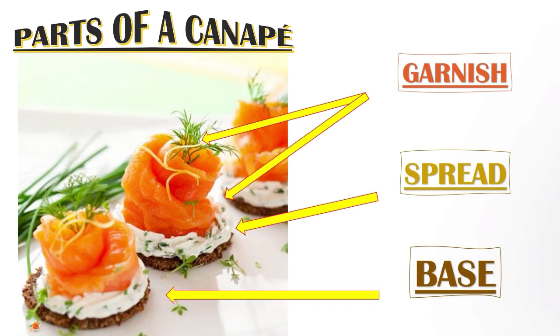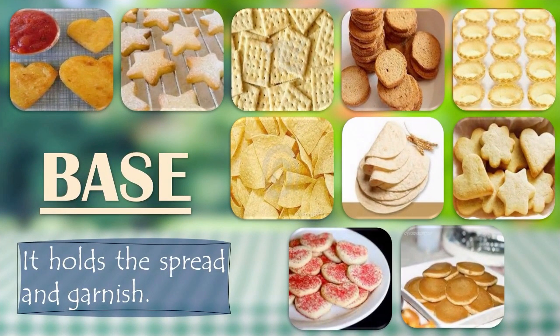Canapes consist of three parts: the base, which holds the spread and garnish. Crackers and toast are firmer and give a pleasing texture and crispiness. The following are bases for canapes: bread cut-outs, toast cut-outs, crackers, melba toast, tiny pastry shells, tortilla chips or cups, tiny biscuits, polenta cut-outs, and miniature cupcakes or pancakes.